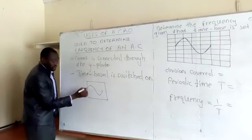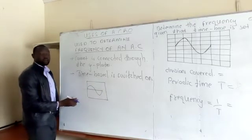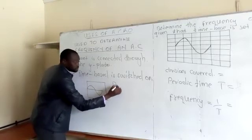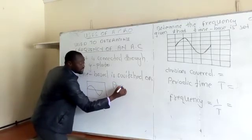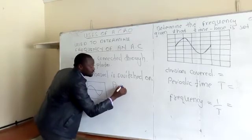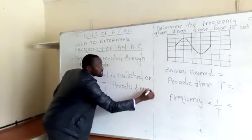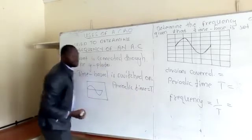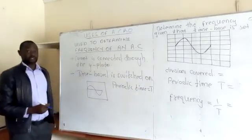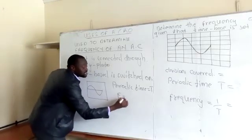From this one wave we can determine the periodic time. We know from waves that frequency is given by the reciprocal of the periodic time, and therefore we'll be able to determine the frequency of our alternating current from the periodic time.